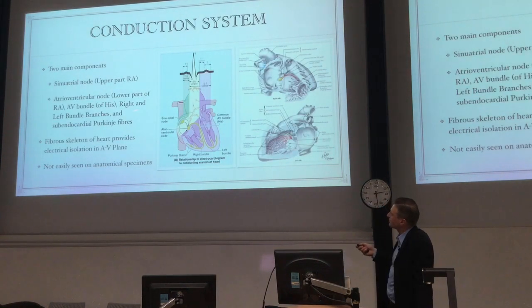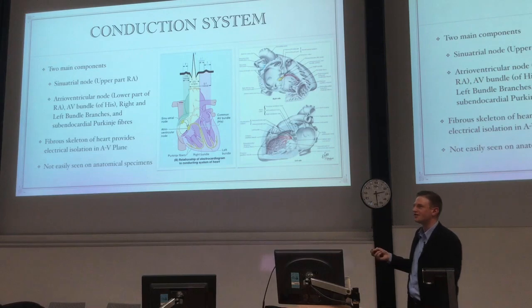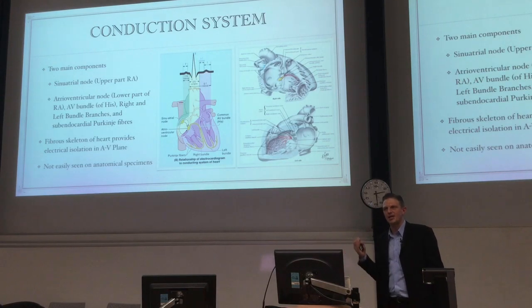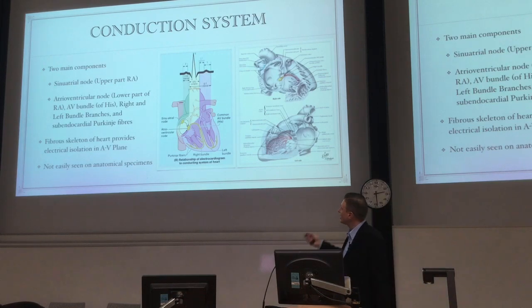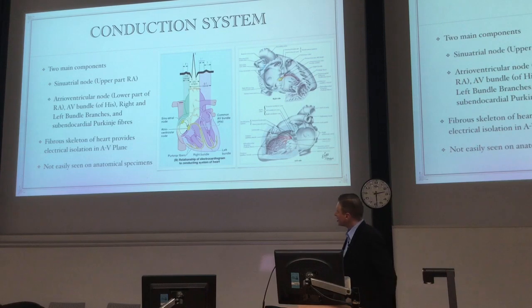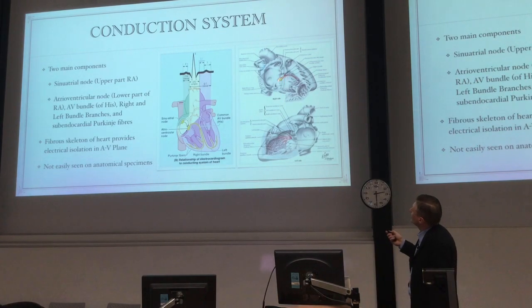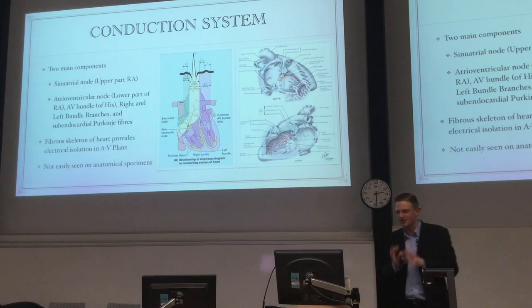The conduction system has two main components. The sinoatrial node is in the upper part of the right atrium, at the junction of the right atrium and the SVC. Then basically everything else follows: the AV node, the AV bundle of His, the right and left bundle branches, and the subendocardial Purkinje fibres. These are designed to pierce the fibrous skeleton of the heart — so there is only one pathway in a normal heart by which electrical contractions can be propagated. Importantly, these are cardiac cells, not nerve cells — they are specialised muscle cells. The AV bundle runs through the membranous part of the septum, then down the walls of the septum and gives off Purkinje fibres, activating the heart in a way that causes it to contract nicely and efficiently.